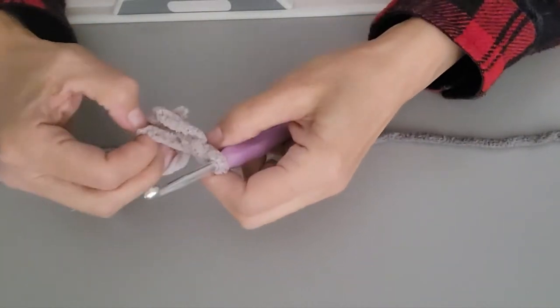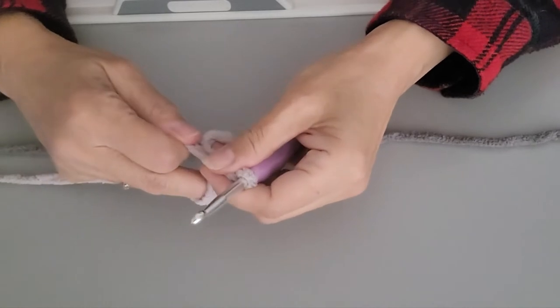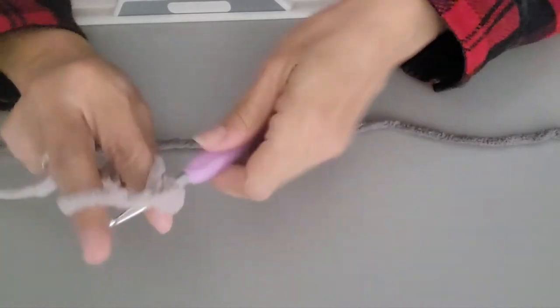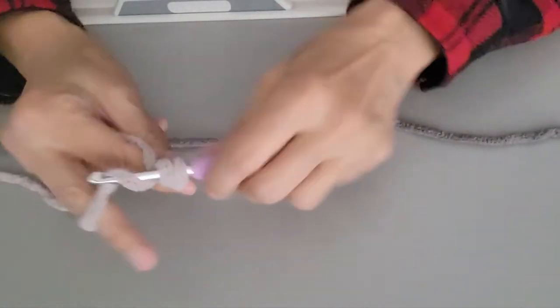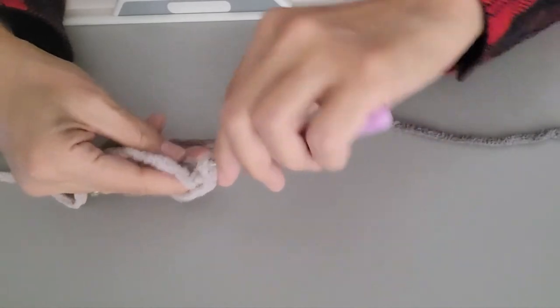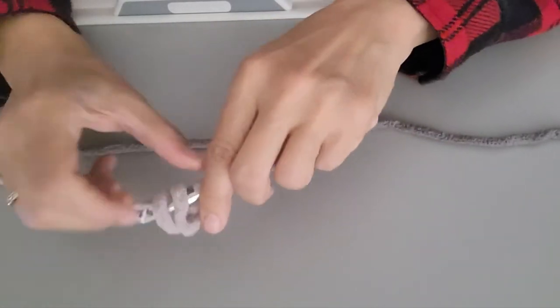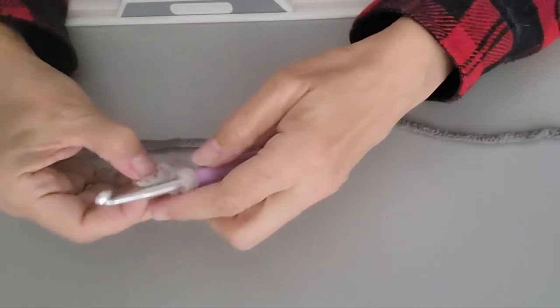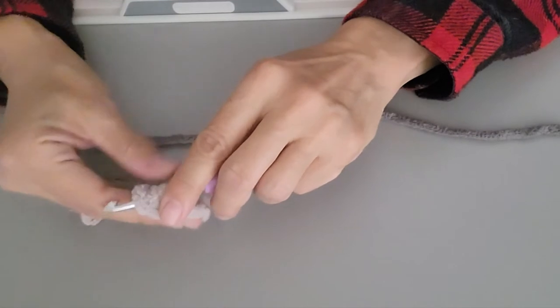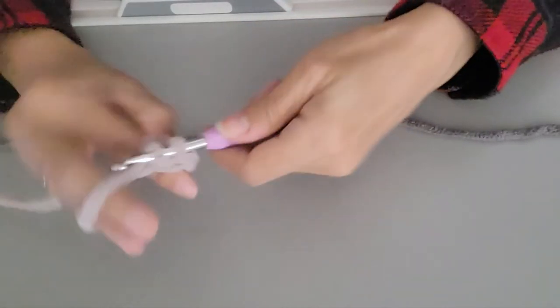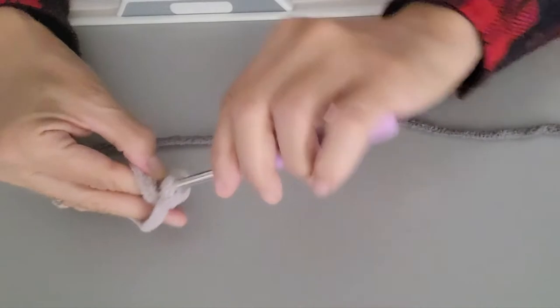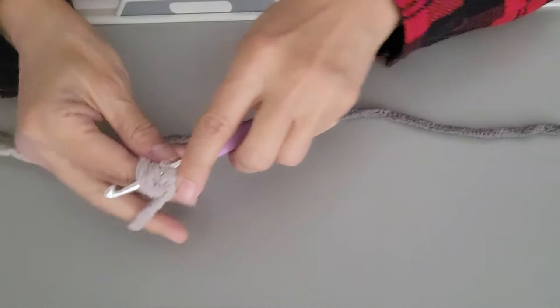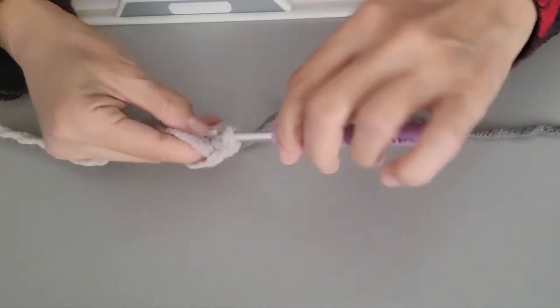I like to straighten it out a little bit before I continue, and then I'm going to go ahead and do five single crochets. Let me make this a little bit smaller. Sometimes it wants to get twisted around if I don't make it small enough. Okay, so I've got one in there, two, three, four, and five.